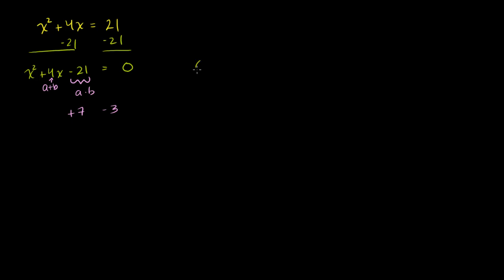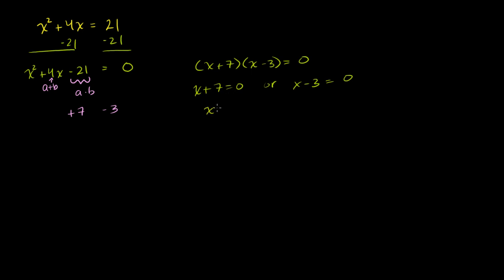So I can rewrite this equation as x plus 7 times x minus 3 is equal to 0. I have two quantities whose product is equal to 0, which means one or both of them must equal 0. So either x plus 7 equals 0, giving x equals negative 7, or x minus 3 equals 0, giving x equals 3. Both of these are solutions.